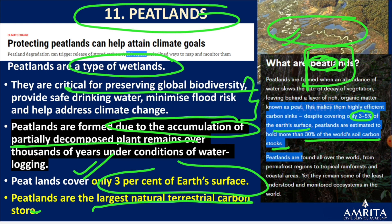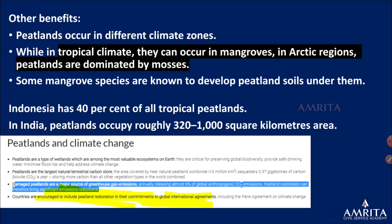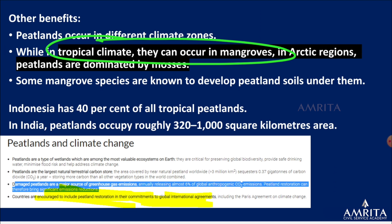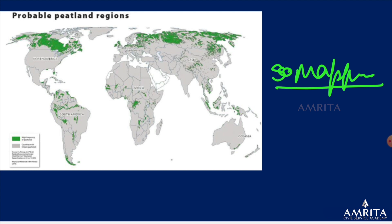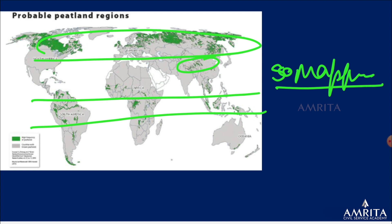Probable exam questions on peatland relate to their location — peatlands can be in tropical climates, including mangroves, and in Arctic climates dominated by mosses. Mapping of peatlands is also ongoing. They can be found in tropical areas, polar areas, and alpine areas. If the question asks about their location in tropical areas — yes, they are present; you can write they are found in almost all climate zones.